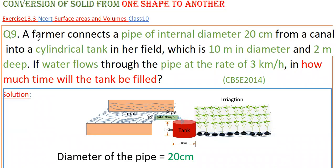Hello everyone. Today I am going to tell the solution of problem 9 from exercise 13.3 from NCERT, surface areas and volumes class 10. A farmer connects a pipe of internal diameter 20 centimeters from a canal into a cylindrical tank in a field which is 10 meters in diameter and 2 meters deep. If water flows through the pipe at the rate of 3 kilometers per hour, in how much time will the tank be filled?